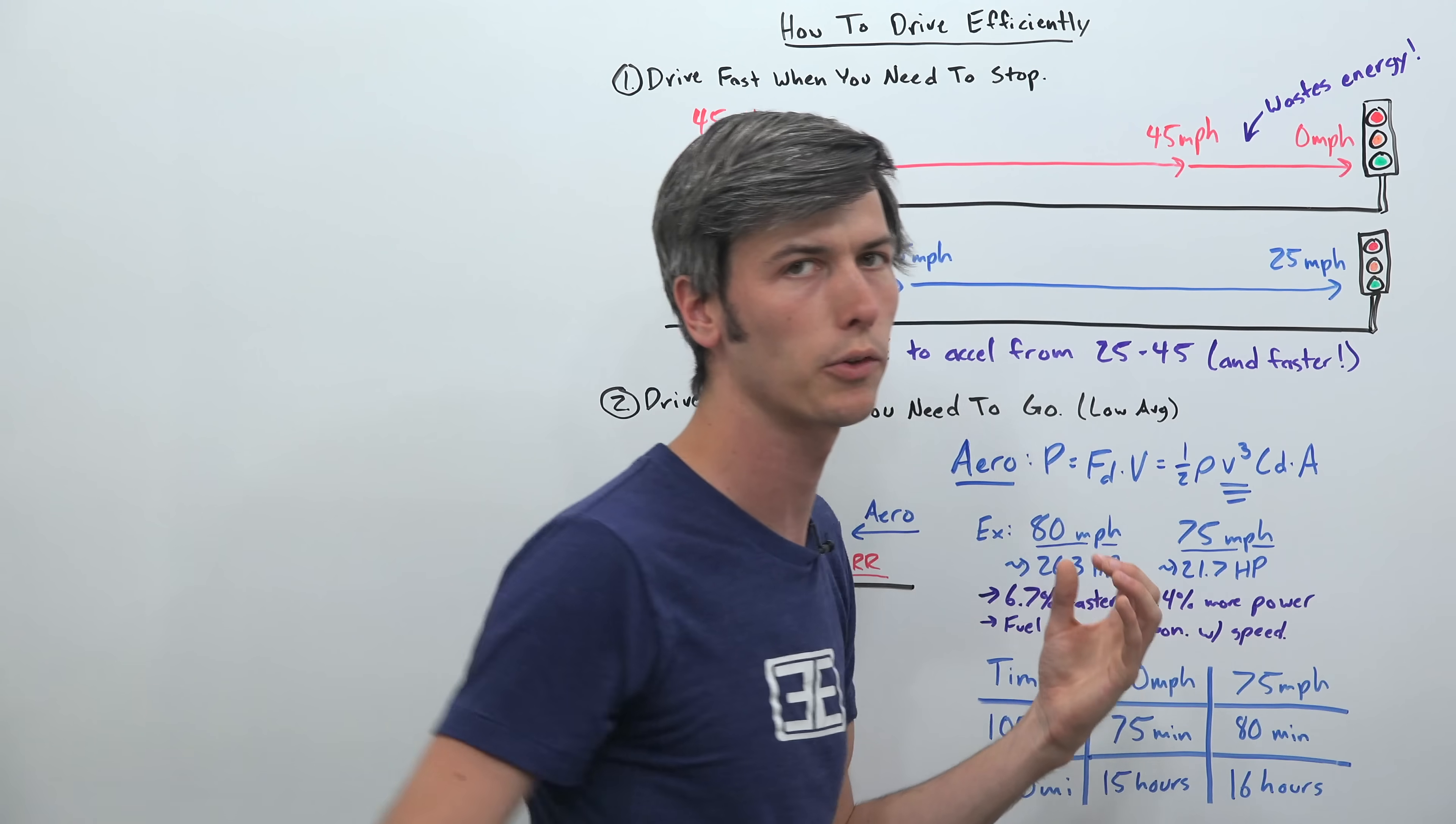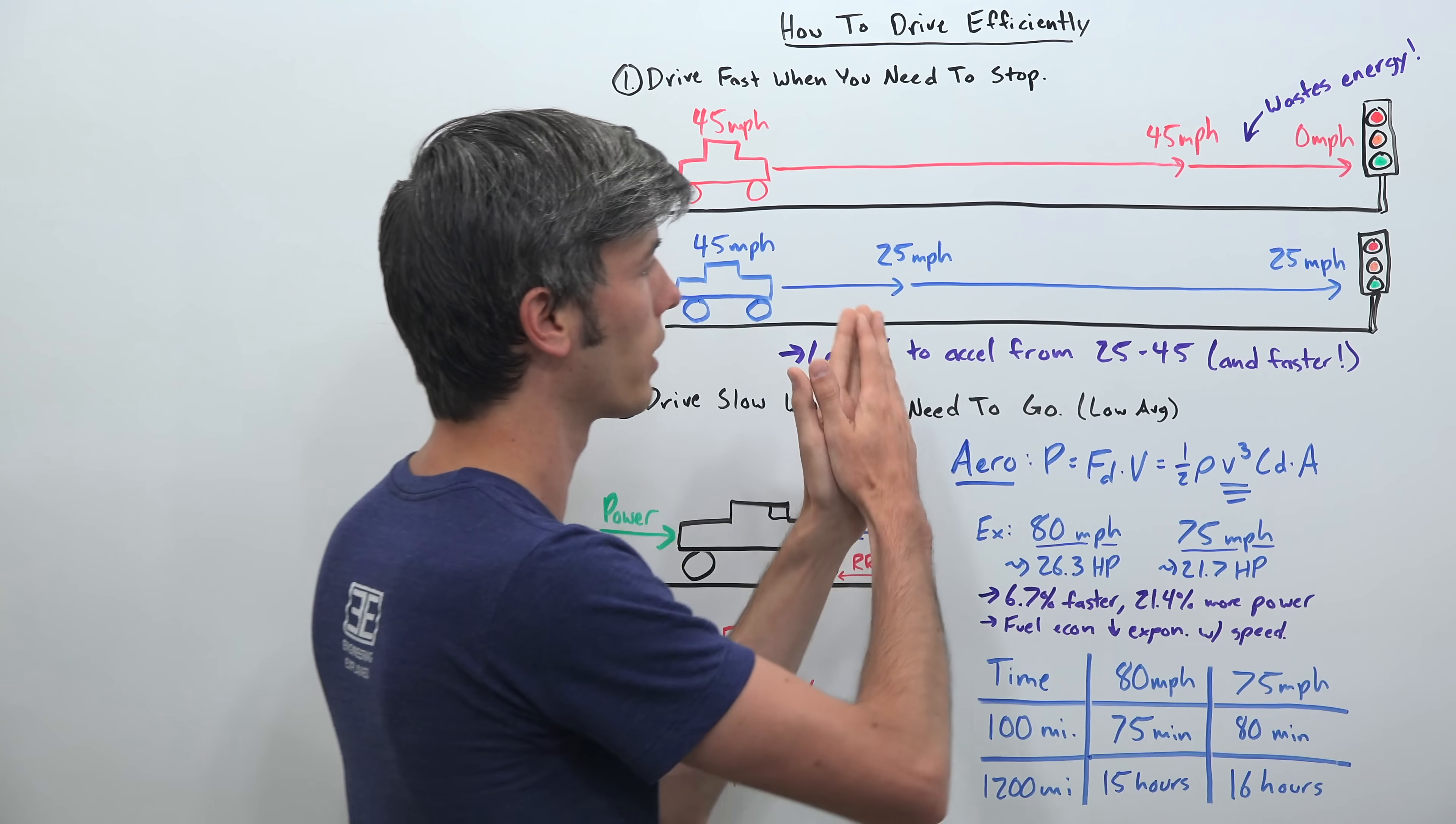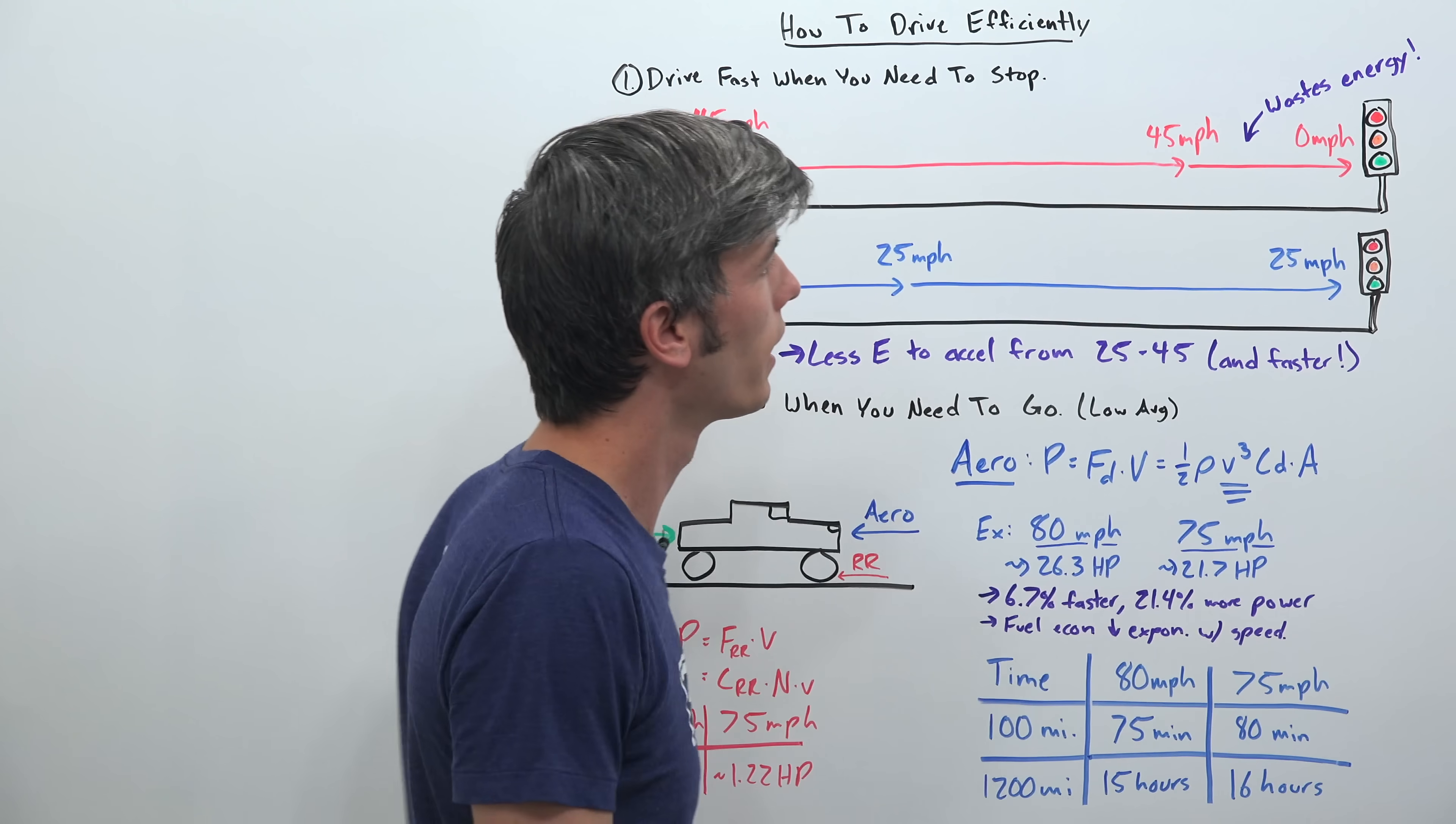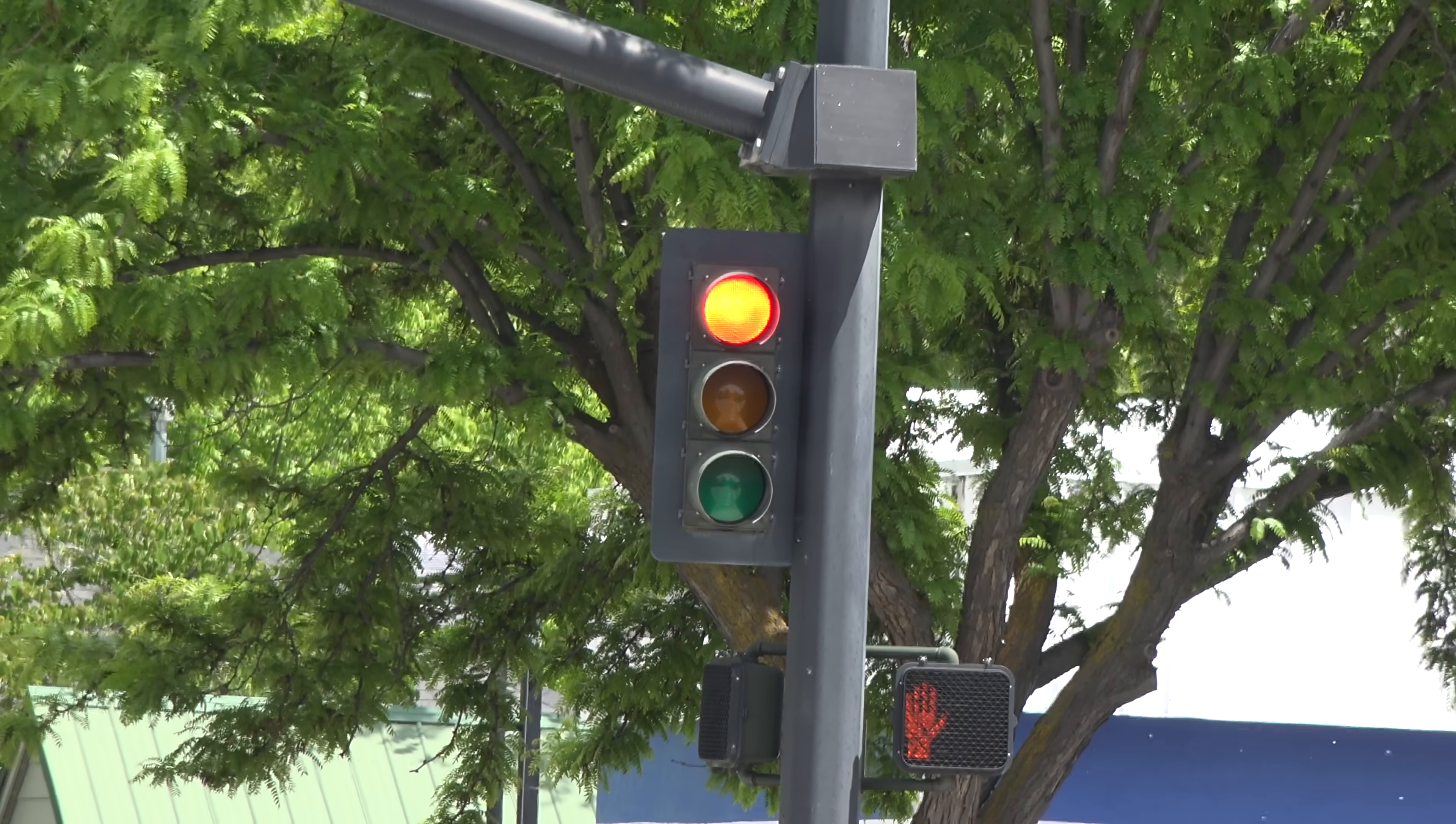The light turns green at the same time for both of these cars. This one's already going 25 miles per hour. So it doesn't have to accelerate from zero. It's only accelerating from 25. So not only is it more efficient because it's not accelerating from zero up to 45, but it's also faster because once you get to that green light, you're now moving forward where this one is only at zero miles per hour. So when you're approaching a stoplight, you want your speed to be as high as possible for when it actually turns green.